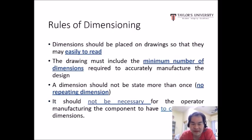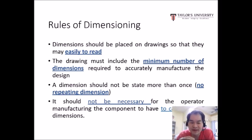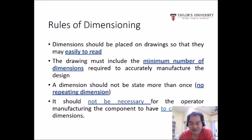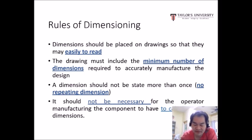Regarding the rules of dimensioning: dimensions should be placed on drawings so that they may be easily read. The drawing must include the minimum number of dimensions required to accurately manufacture the design. A dimension should not be repeated, and it should not be necessary for the operator manufacturing the component to have to calculate dimensions.